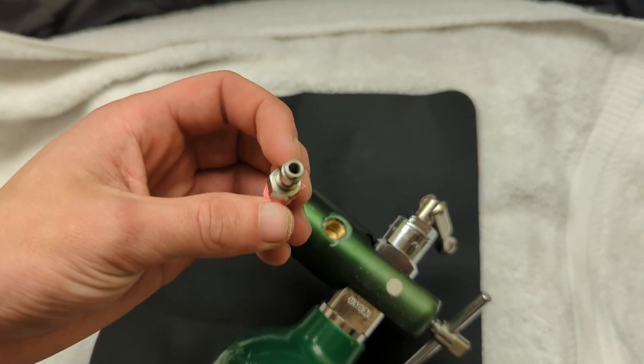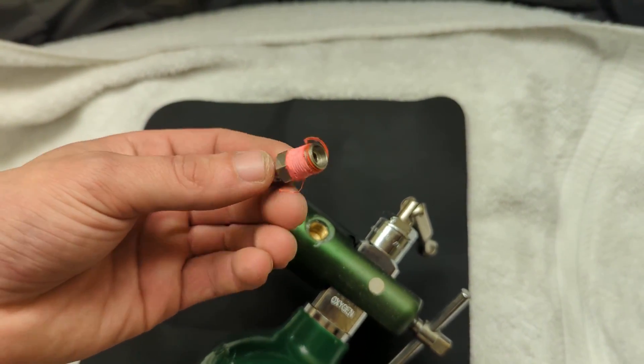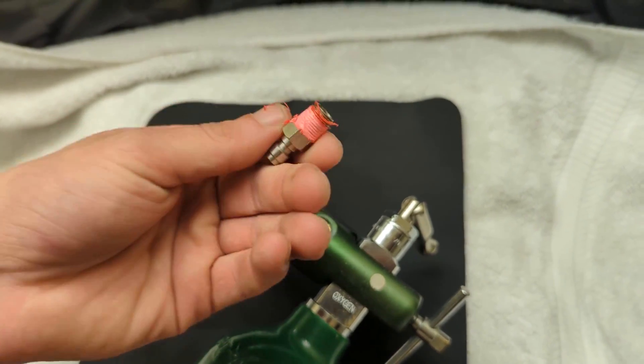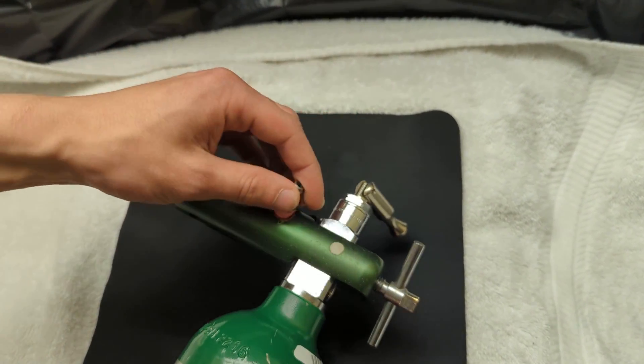Now here's a paintball tank fitting and this is used for high pressure systems like 4,500 psi. I have some teflon tape around it and I'm just going to screw it right in there.